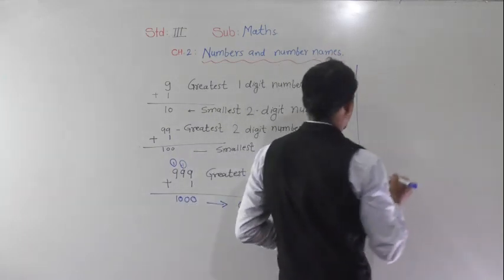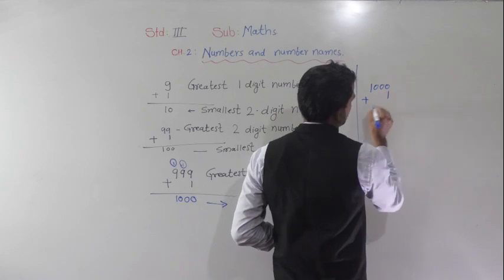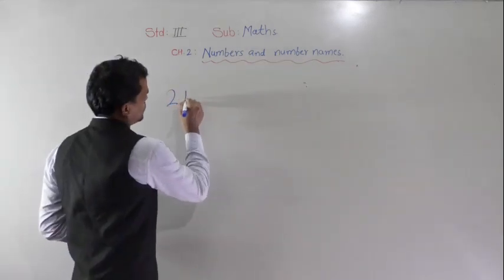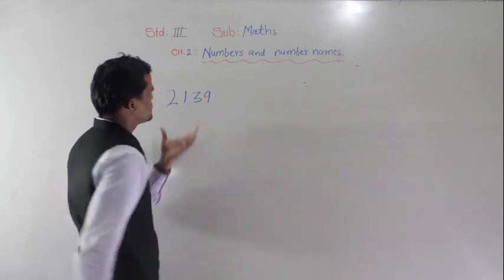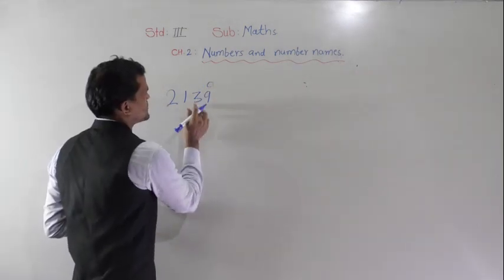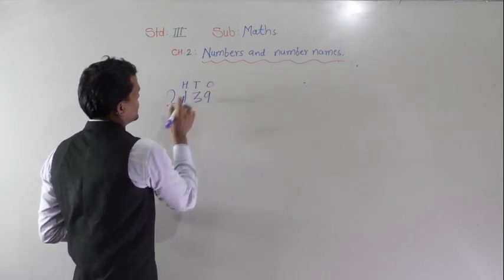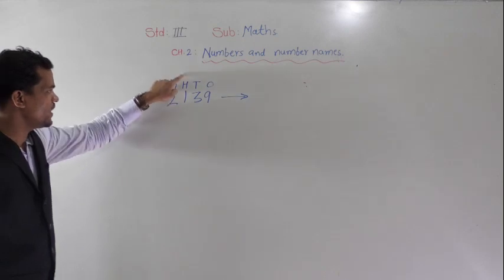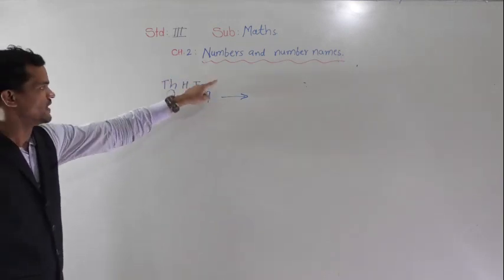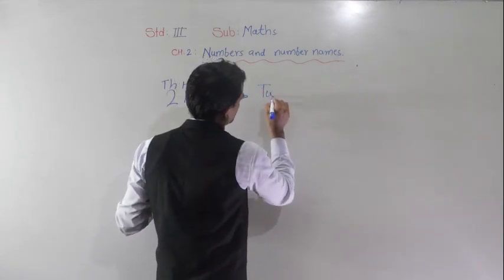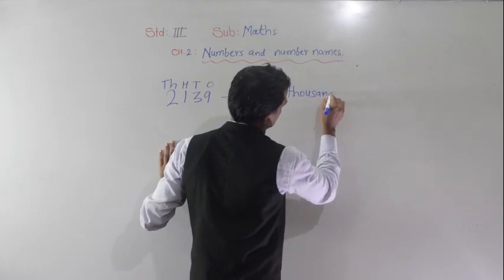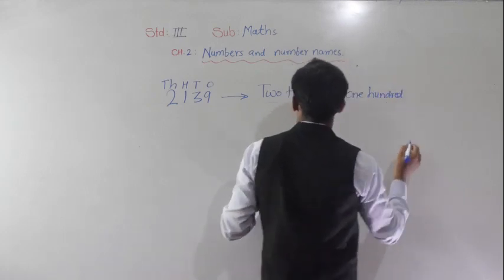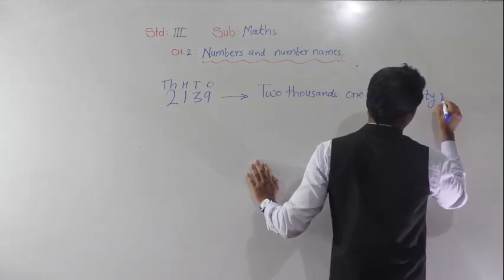Now, let's read a 4-digit number. 9 comes at the 1s place, 3 comes at the 10s place, 1 comes at the 100s place, and 2 comes at the 1000s place. So we read this number as 2139. Write the name: two thousand one hundred and thirty-nine.